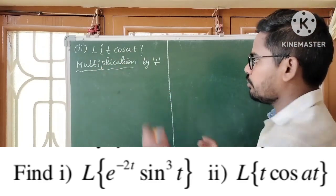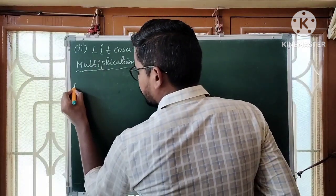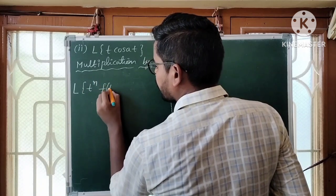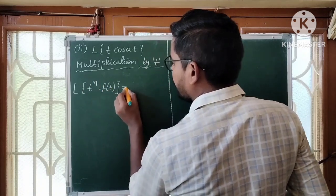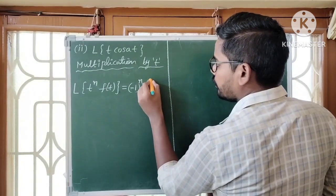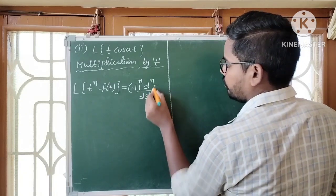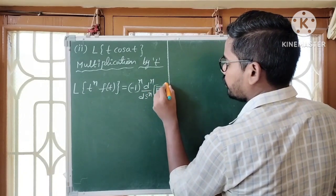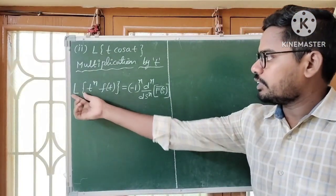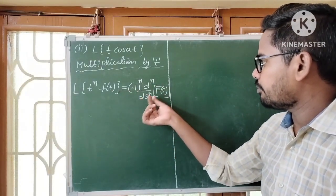I am going to use the multiplication-by-T concept. According to this concept, the Laplace transform of T^N·F(T) is equal to (-1)^N · d^N/dS^N · F̄(S). This is the formula for Laplace transform of T^N·F(T).